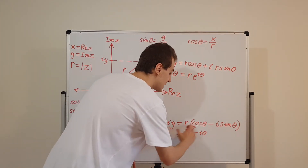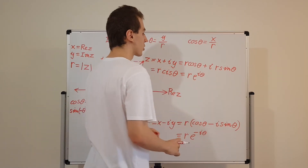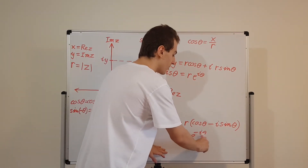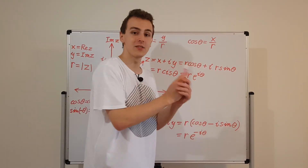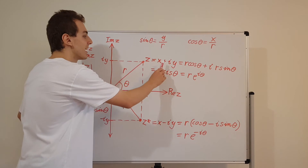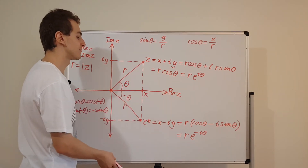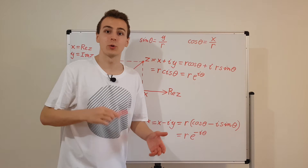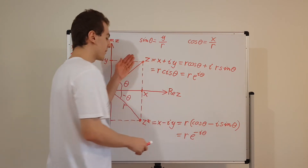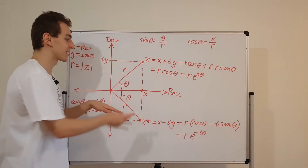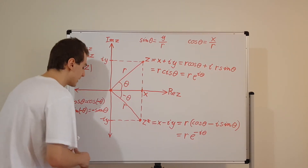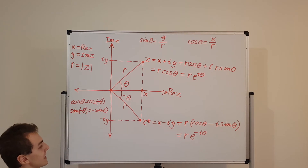So z star is the complex conjugate of z. Complex conjugation is very easy in polar form — all you have to do is change the sign of the angle. When you change the sign of the angle, you've complex conjugated. That's equivalent to changing i to minus i or minus i to i. If you complex conjugate twice, you get back to where you started — the reflection of the reflection gets you back to where you were.